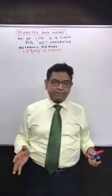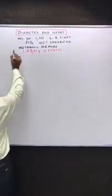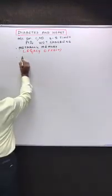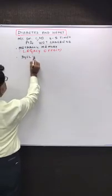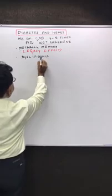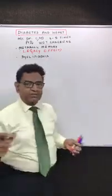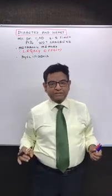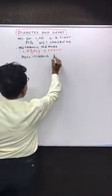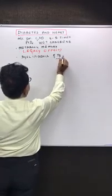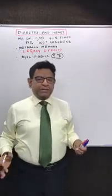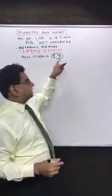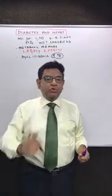Now, why are CAD and peripheral disease so common in diabetics? Because of dyslipidemia — a lot of dyslipidemia occurs in diabetes, predisposing to atherosclerosis. The very frequently asked question is: what is the earliest dyslipidemia to occur in diabetes? The answer is raised triglycerides. In all secondary dyslipidemias like diabetes, the first thing to rise is triglycerides.